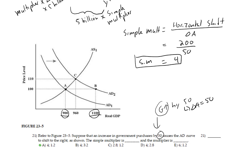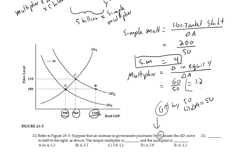Now to figure out the multiplier, remember that equals the change in equilibrium y in the short run divided by the change in A. The difference between points c and a is only 60. So now it's 60 divided by 50, which equals 1.2. So we have a multiplier of 1.2 and a simple multiplier of 4.